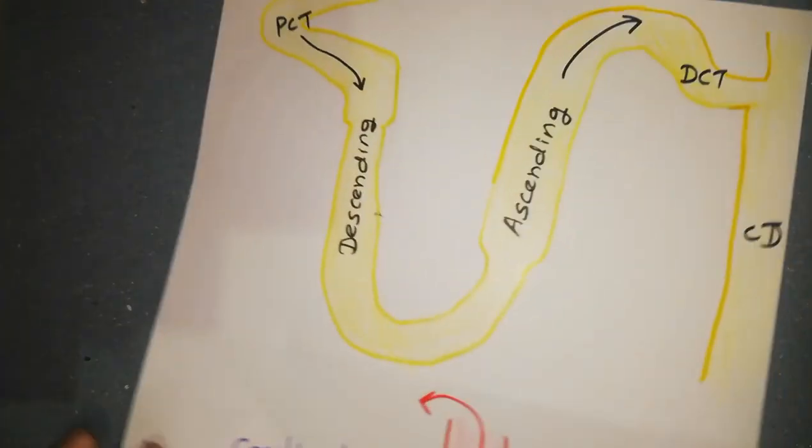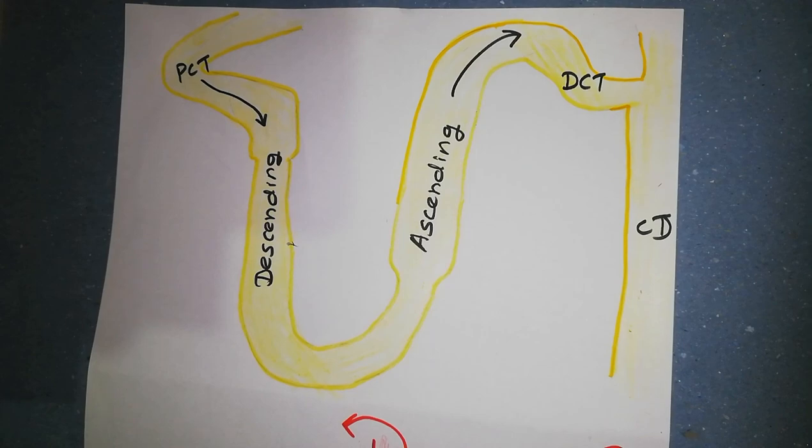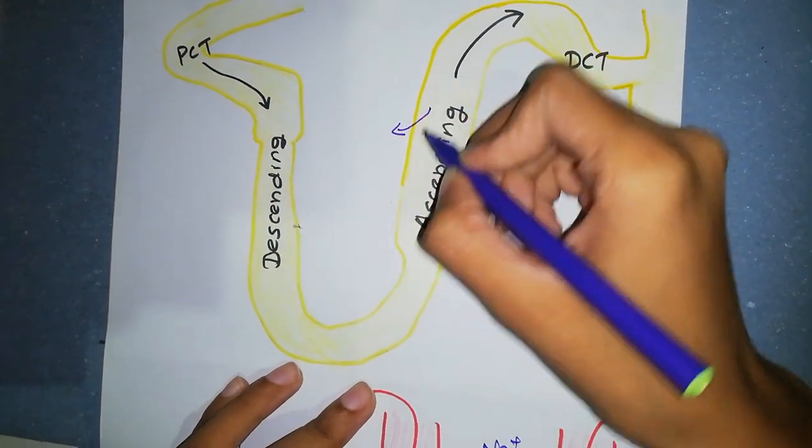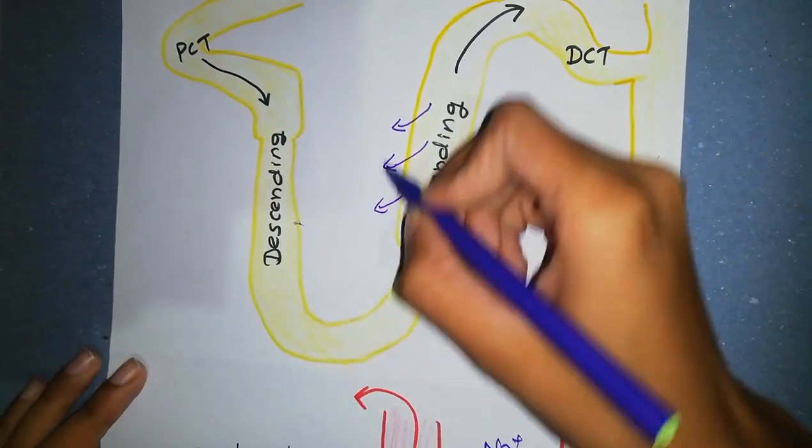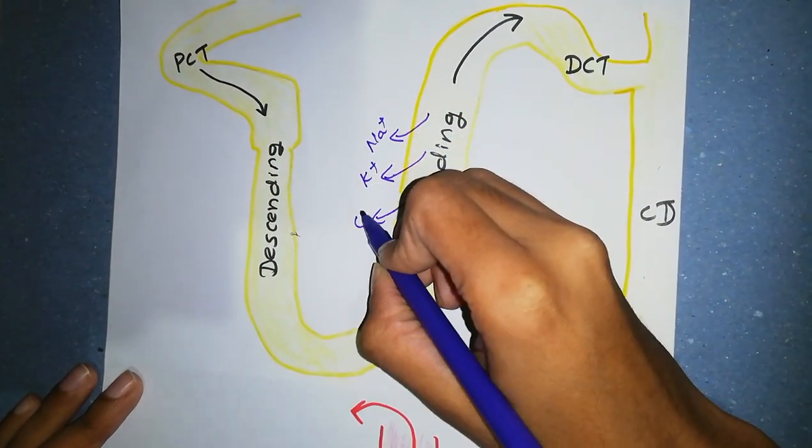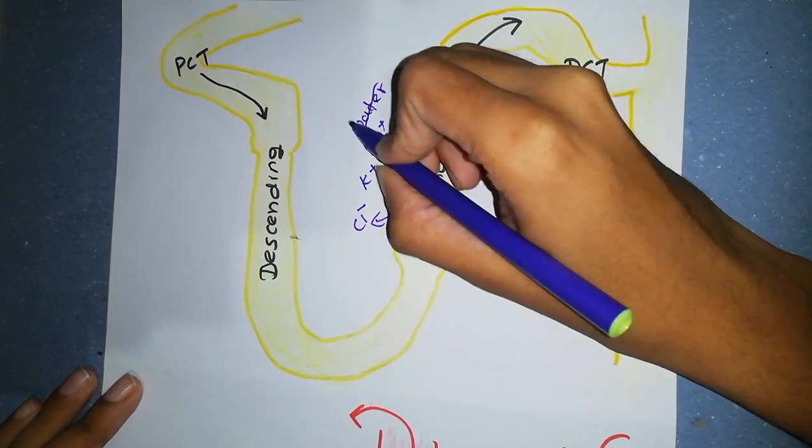Let's see how the counter current multiplier works. It happens in loop of Henle. Point number one: In the thick ascending part of the loop of Henle, several ions are transported into the medullary interstitium. But this part of the nephron is water impermeable. So the transported ions are not followed by the water. So this part adds ions to interstitium in excess of water.